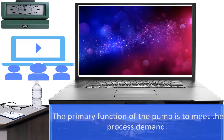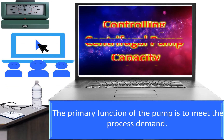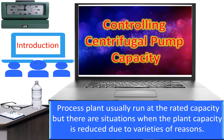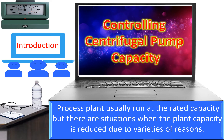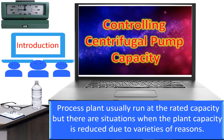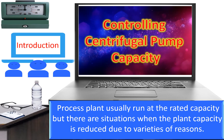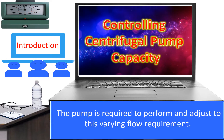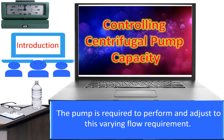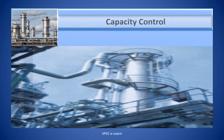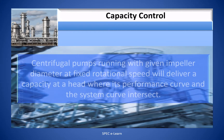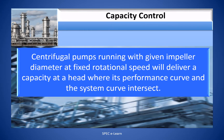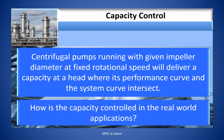The primary function of the pump is to meet the process demand. Process plants usually run at the rated capacity, but there are situations when the plant capacity is reduced due to a variety of reasons. The pump is required to perform and adjust to this varying flow requirement. Centrifugal pumps running with a given impeller diameter at fixed rotational speed will deliver a capacity at a head where its performance curve and the system curve intersect.